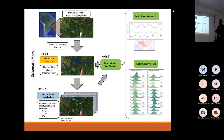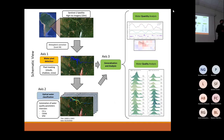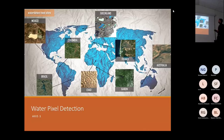In axis three, we put everything together to provide water quantity and water quality analysis at a regional scale — something that moves towards giving decision makers usable information.